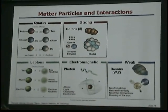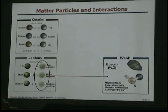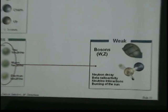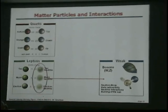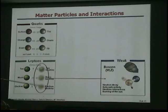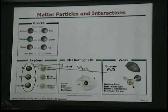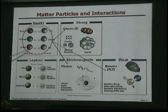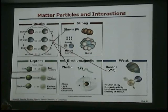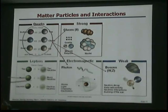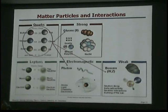Not every particle is susceptible to every force. Neutrinos are only susceptible to the weak force. Leptons are susceptible to the electromagnetic and the weak force. Quarks are susceptible to all three — strong, electromagnetic, and weak. So if I wanted to learn something about the strong force and I study neutrinos, I will never learn anything about the strong force by studying neutrinos directly, because they don't interact via that force.